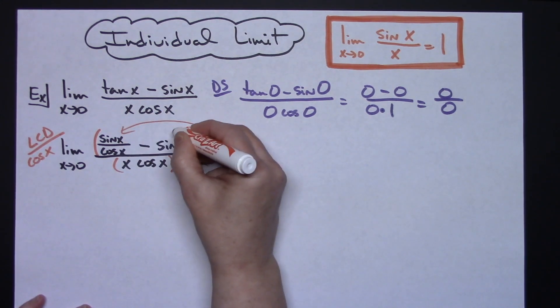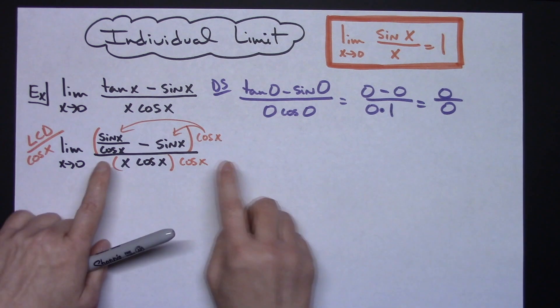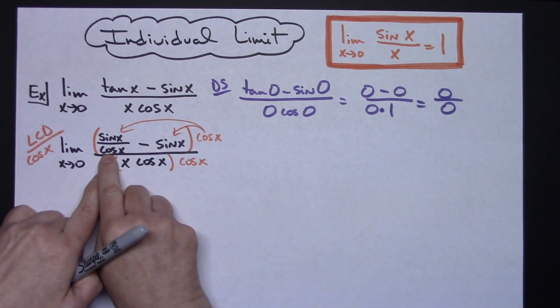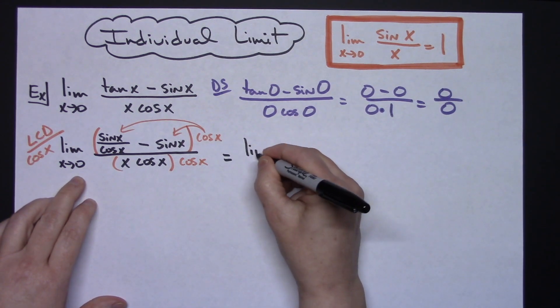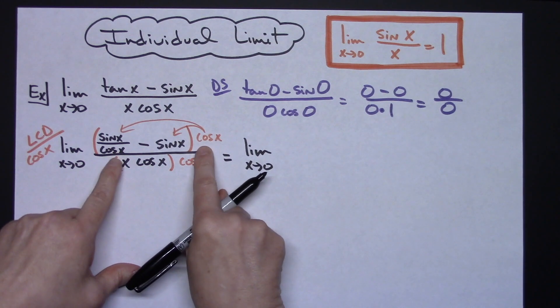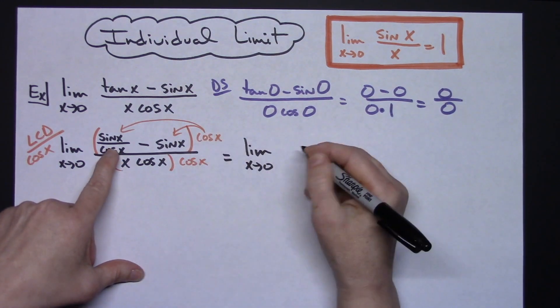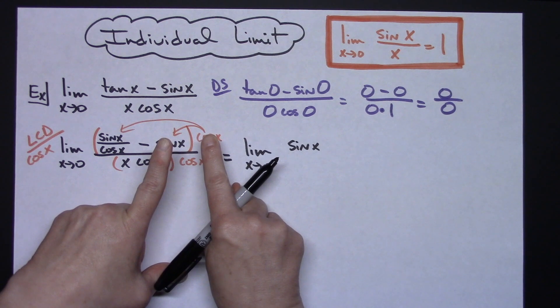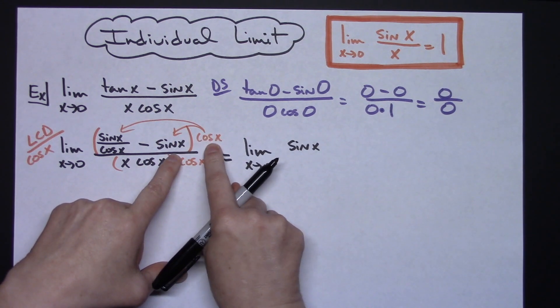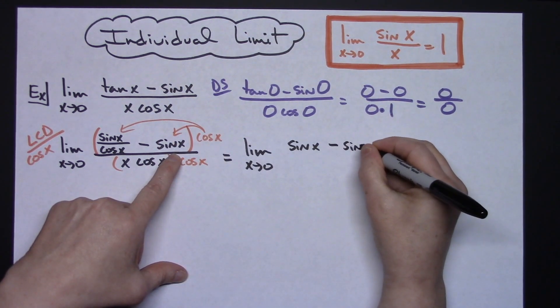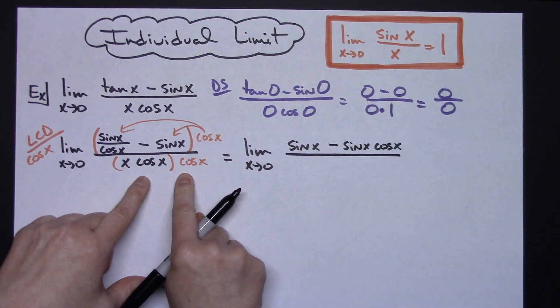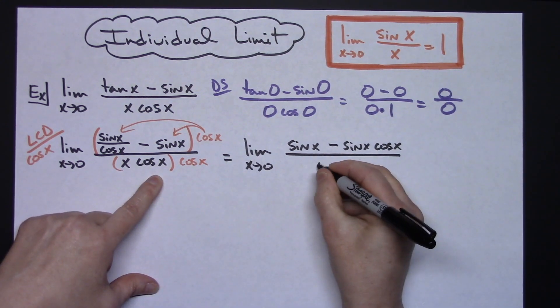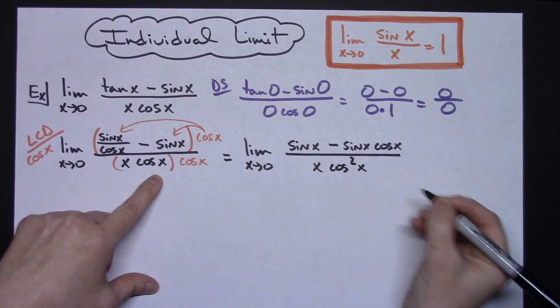The top has to be distributed. When I multiply these two, the cosines cross out which gets rid of the fraction. So we have the limit as x approaches 0 of sin(x), and then multiplying these two gives sin(x) cos(x), all over on the bottom x times cosine times cosine, so x cosine squared x.